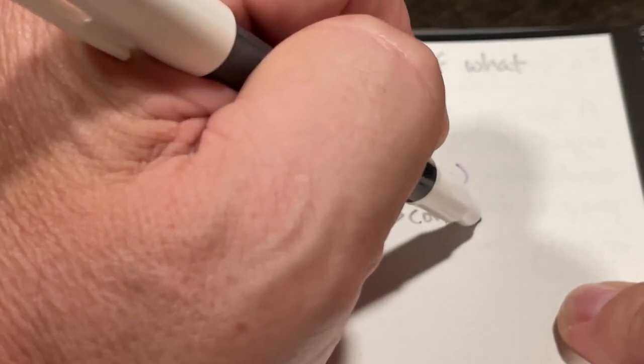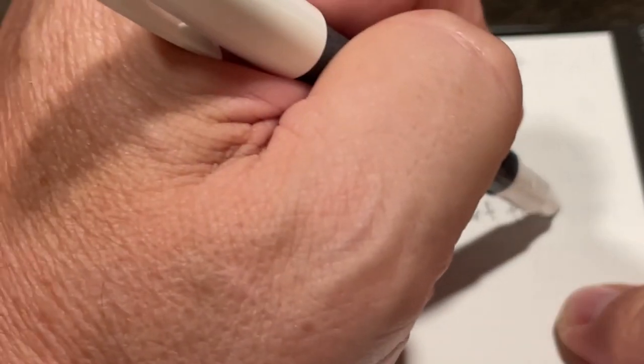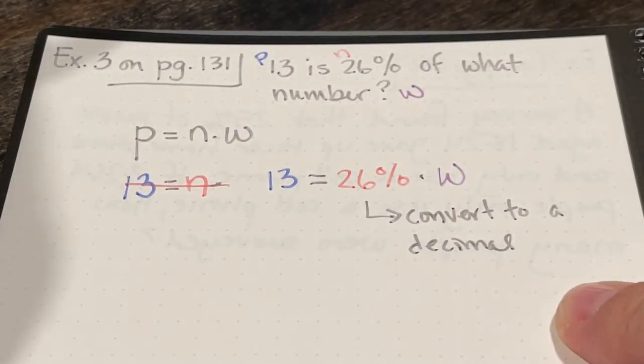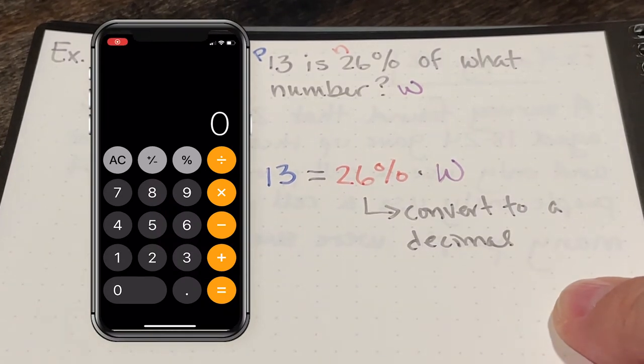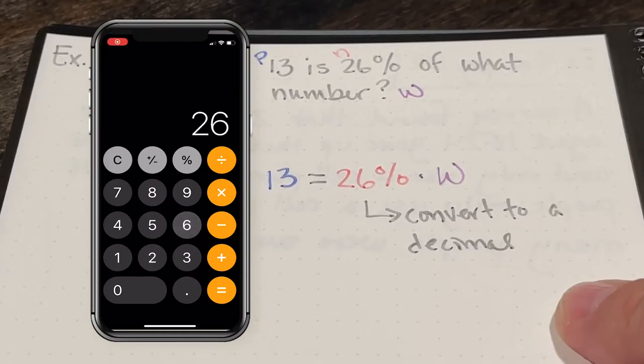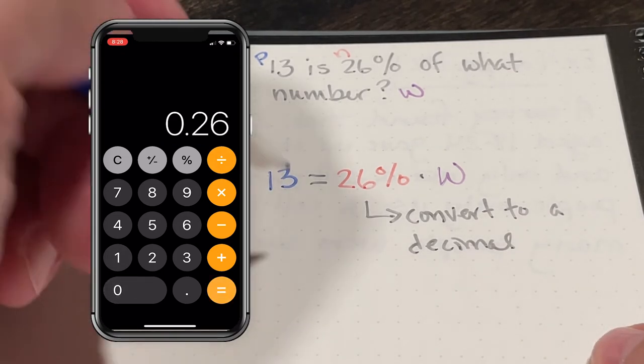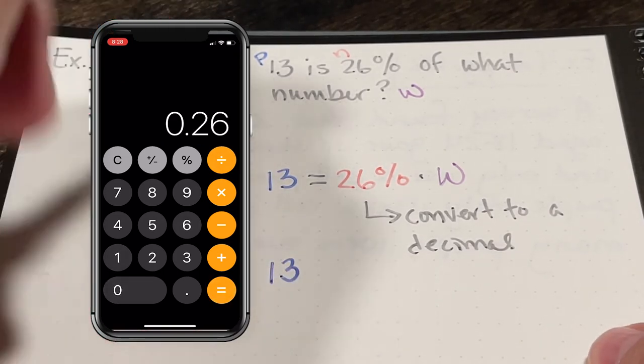And since I'm dealing with a percent, I want to convert this to a decimal. So I have to think about what is 26% as a decimal. So I can take 26, divide it by 100, and that will get me 0.26.